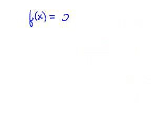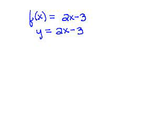Let's try algebraically how to find an inverse function. Given f(x) = 2x − 3, with every input we first double it and then subtract 3. Since f(x) represents y, we interchange x and y: x = 2y − 3. Then we solve for y.